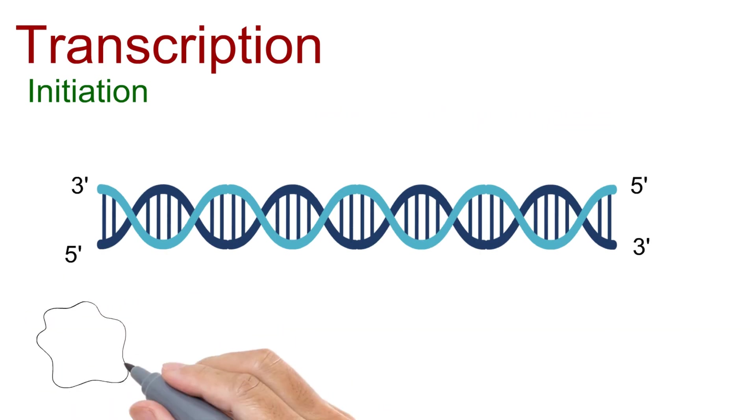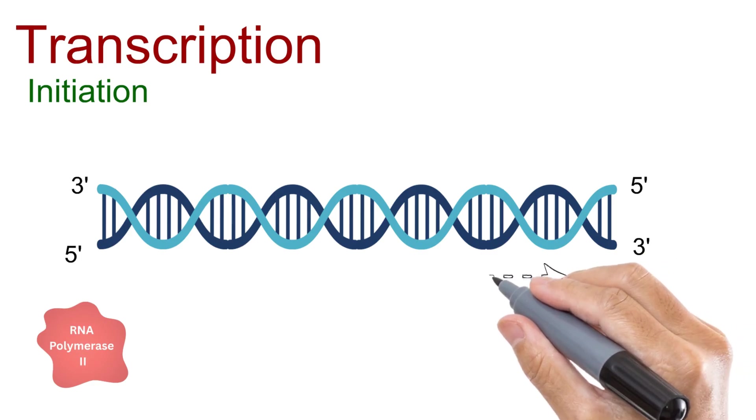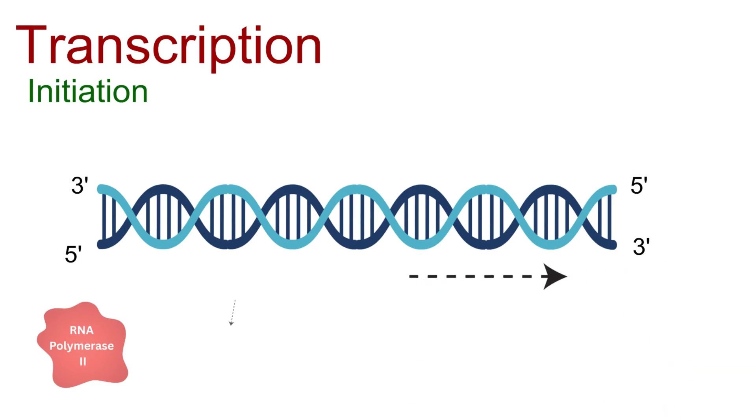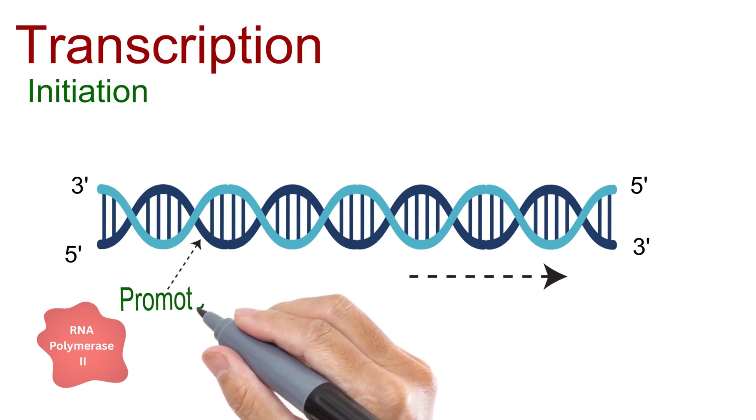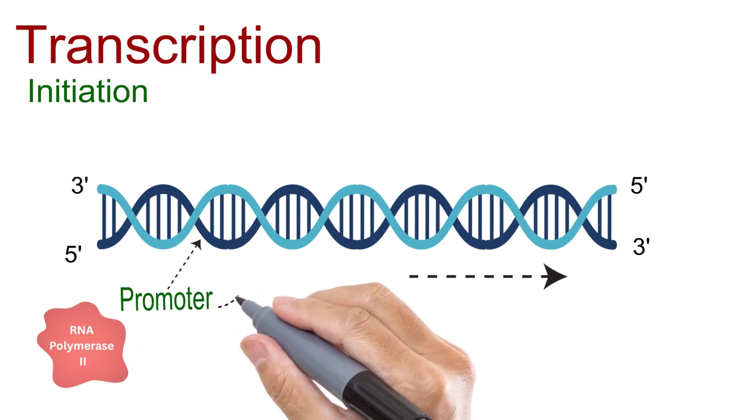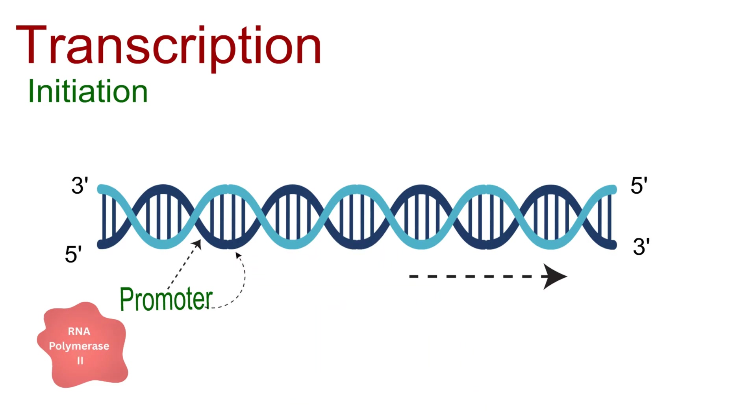First, let's see how RNA polymerase gets started. Transcription always occurs in the 5 to 3 direction. It begins at a specific site on the DNA called the promoter, a short sequence usually about 50 base pairs located near the transcription start site. The promoter is essential because it tells RNA polymerase exactly where to begin. A classic feature of many promoters is the TATA box, found about 25 to 35 bases upstream from the start site.